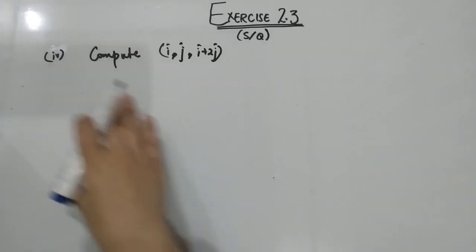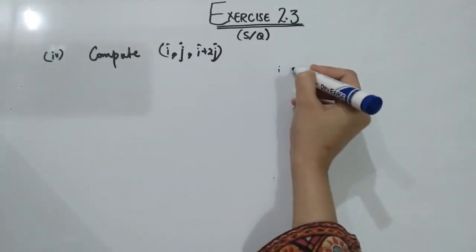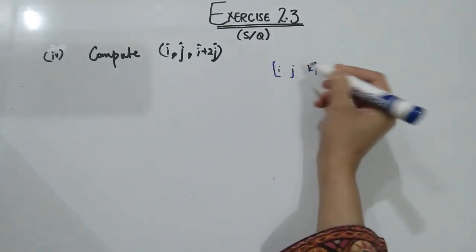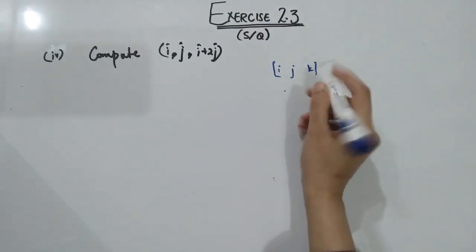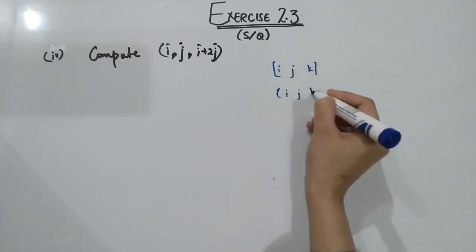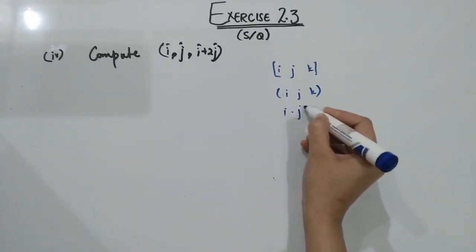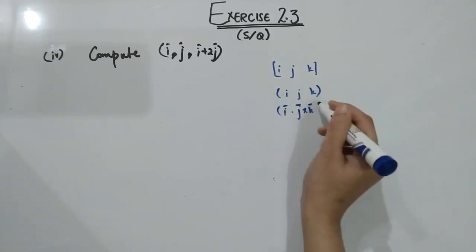This is another way to write the scalar triple product. You can write it as the determinant with rows I, J, K — this is also a representation of the scalar triple product. I dot (J cross K) is also the same representation, and all three forms are equivalent.